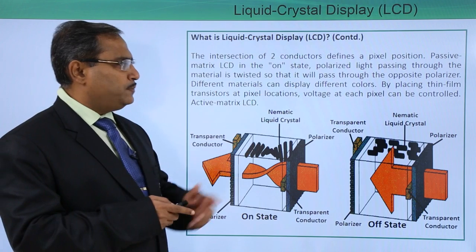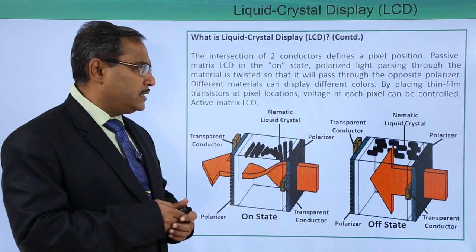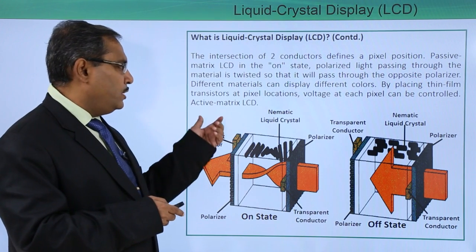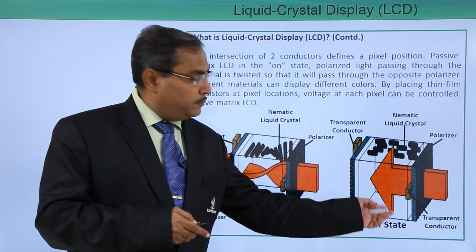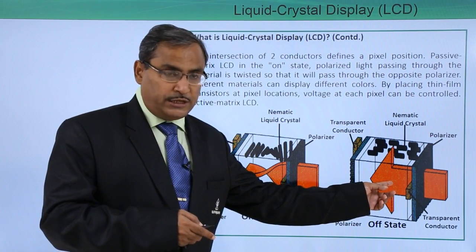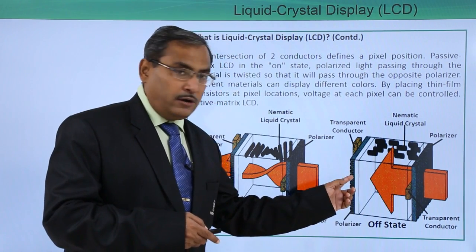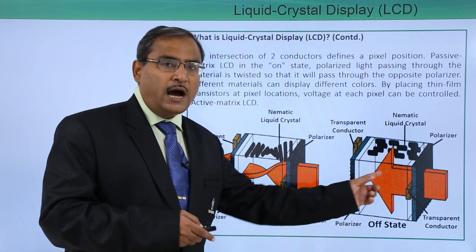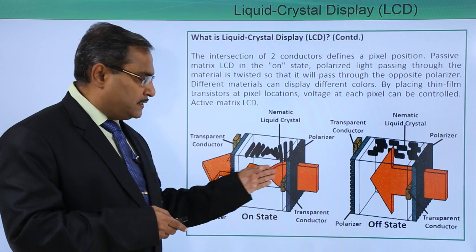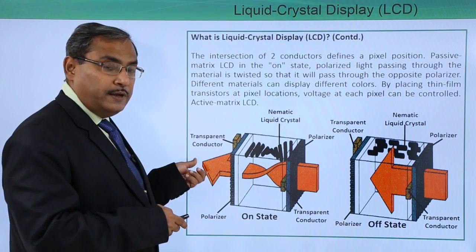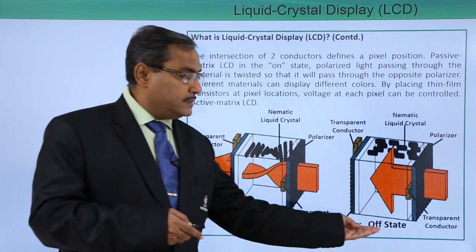Different materials can display different colors. By placing thin film transistors at the pixel locations, the voltage at each pixel can be controlled — active matrix LCD. Here this light has been blocked because the light has not been twisted, so it cannot pass through the respective transparent conductor because the alignment of the optical axes of the polarizers are different — one is horizontal, another one is vertical. Now it has got twisted, and now it can pass through the outside transparent conductor. So this is our on state and this is our off state.